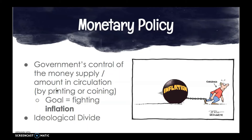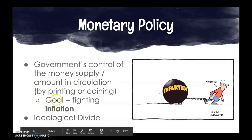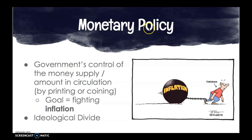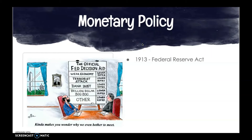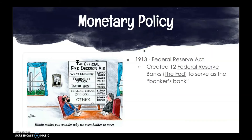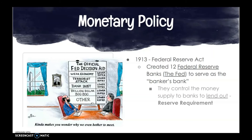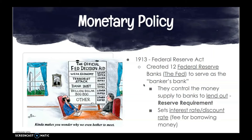Just like with fiscal policy, there is an ideological divide on monetary policy. The arm of the government that regulates monetary policy is the Federal Reserve, created in 1913 with the Federal Reserve Act. This created 12 Federal Reserve Banks known as the Fed — think of it as the banker's bank, since banks have to get their money from somewhere. The Fed controls the money supply that banks can lend out, which is called the reserve requirement — the amount of money banks have to keep on hand.